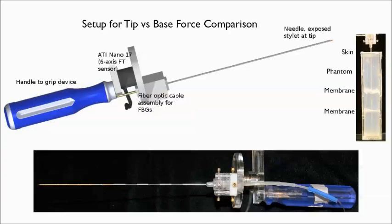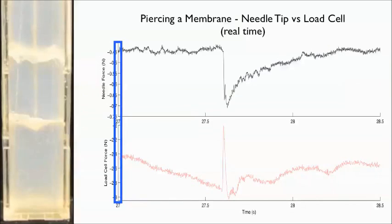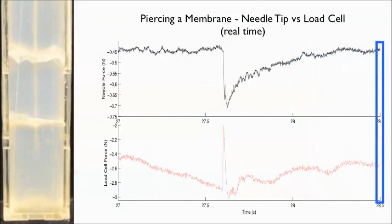The needle was outfitted with a 6-axis force torque sensor at its base to compare loads to those felt by the fiber optic sensors at the needle tip.